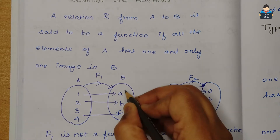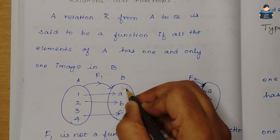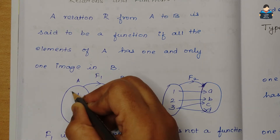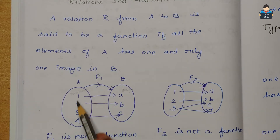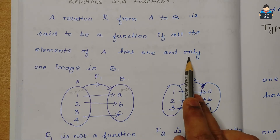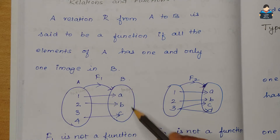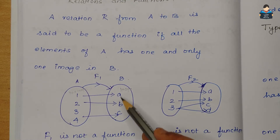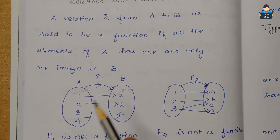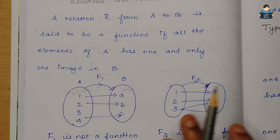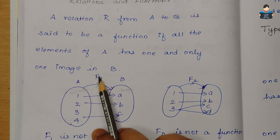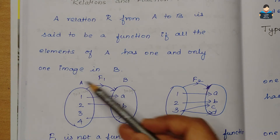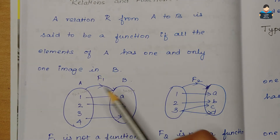If all the elements of A — 1, 2, 3, 4 — have only one image in B, and there is one image in B for each, then we can say that this is a function.